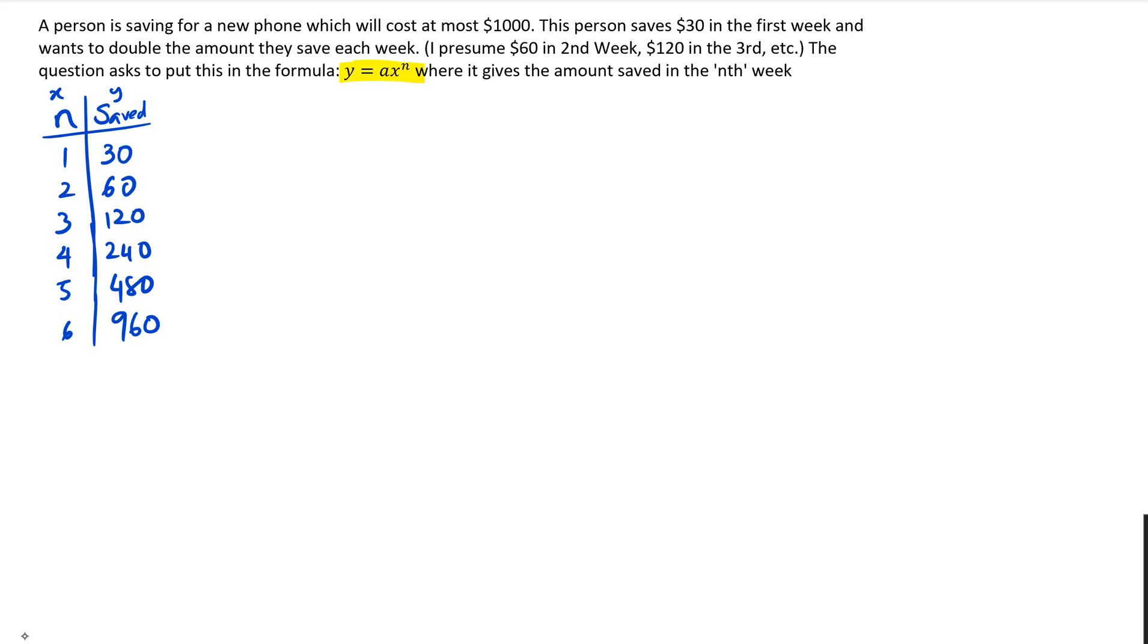Looking at the question, the question is actually asking first that you've got to write the equation, put this in the formula of y equals ax^n. So what you can do is take two values. When I say two values, I'm saying let's take 1 and 30 and then I'm gonna take 2 and 60.